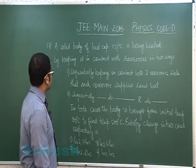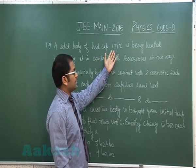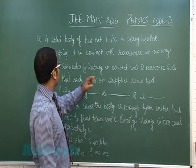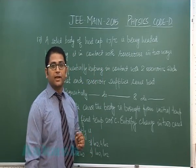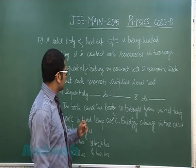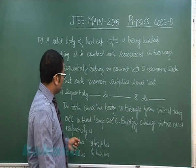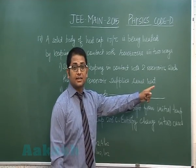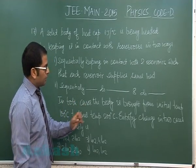Question 17 is from thermodynamics. A solid body of heat capacity (not specific heat capacity) is being heated by keeping it in contact with reservoirs in two ways. First, sequentially keeping in contact with two reservoirs such that each reservoir supplies the same heat. Second, sequentially keeping in contact with eight reservoirs such that each reservoir supplies the same heat.